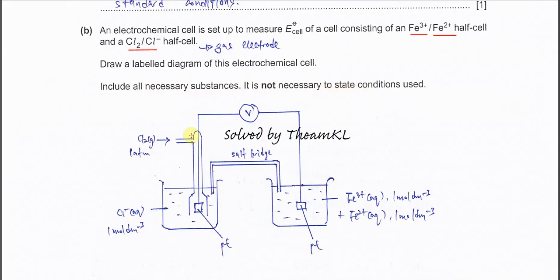You need to draw two half-cells. One is the gas electrode, another one is the Fe³⁺/Fe²⁺ half-cell. For the gas electrode, you must draw the gas input: chlorine gas, 1 atm. The electrode used must be the platinum plate.